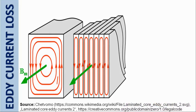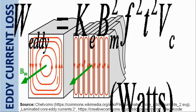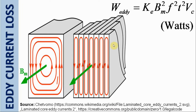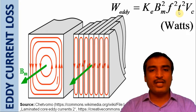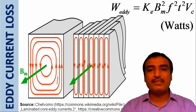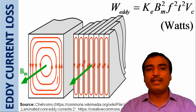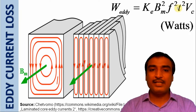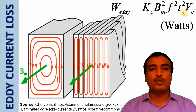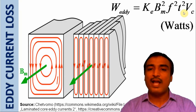This is the expression to calculate the eddy current loss. In this expression, Ke is a constant called the coefficient of eddy current, and its value depends upon the nature of the armature core material. Moreover, T represents the thickness of the core laminations. It is also worth noting that the eddy current loss depends upon the square of the lamination thickness. For this reason, the lamination thickness should be kept as small as possible.